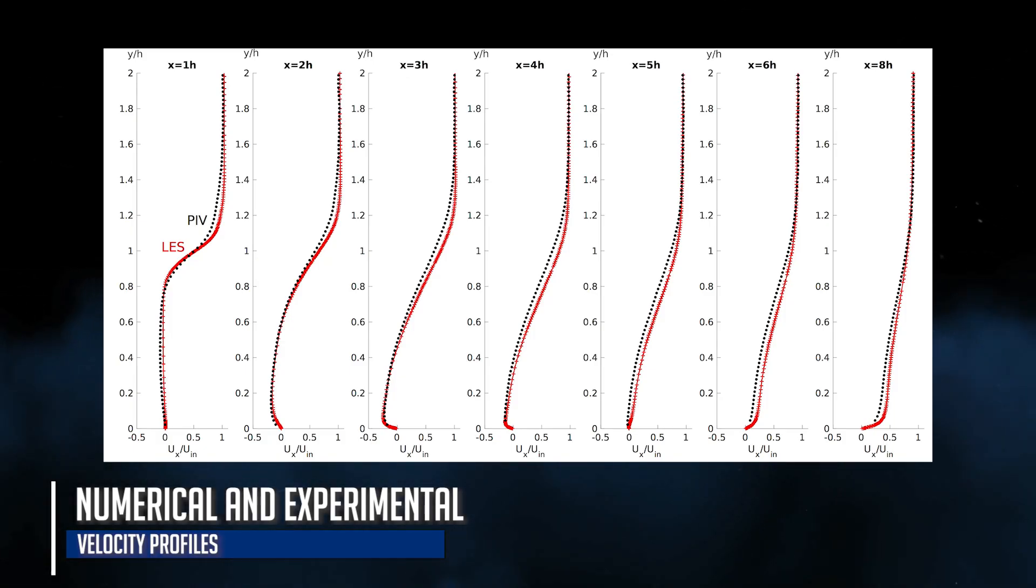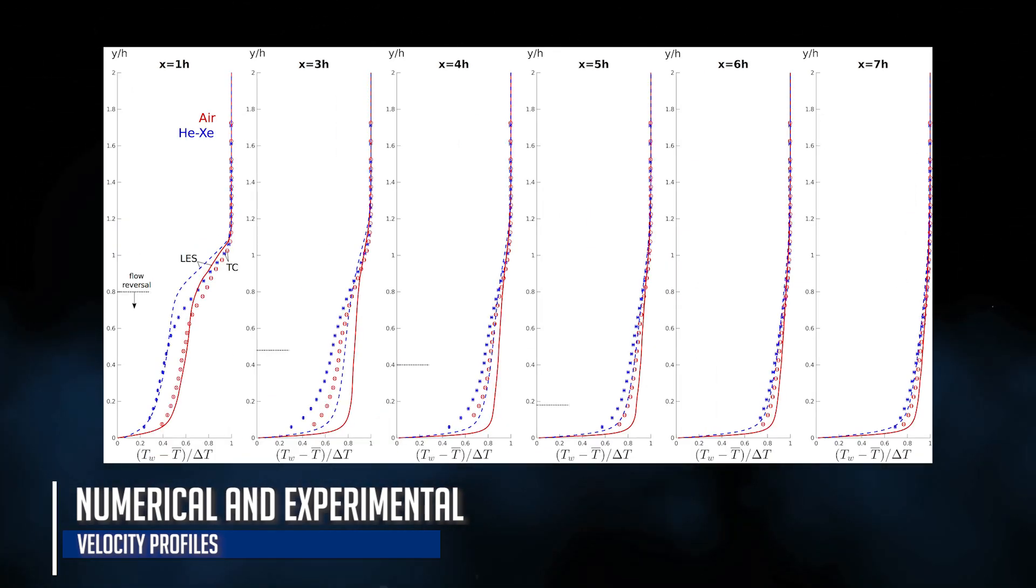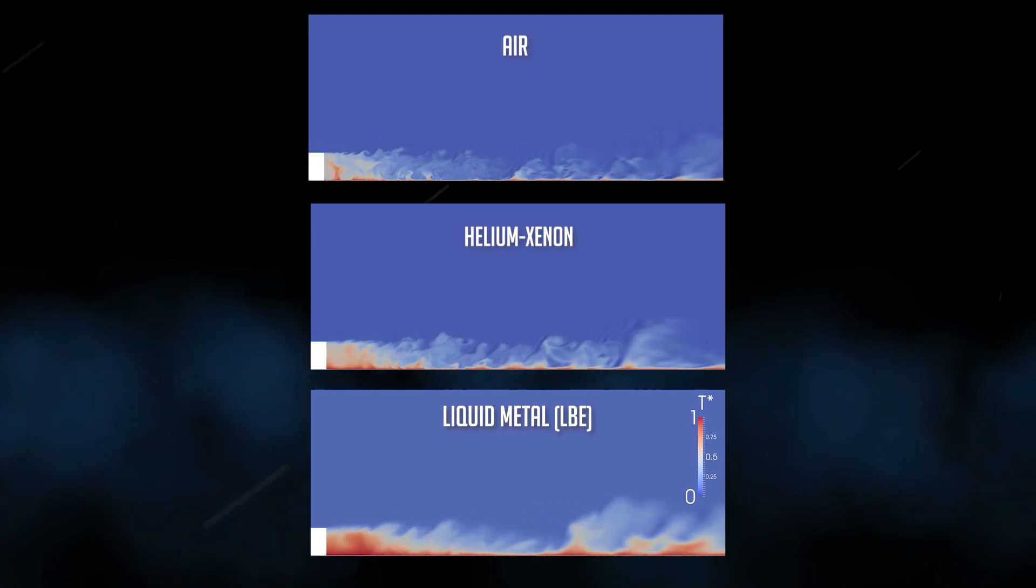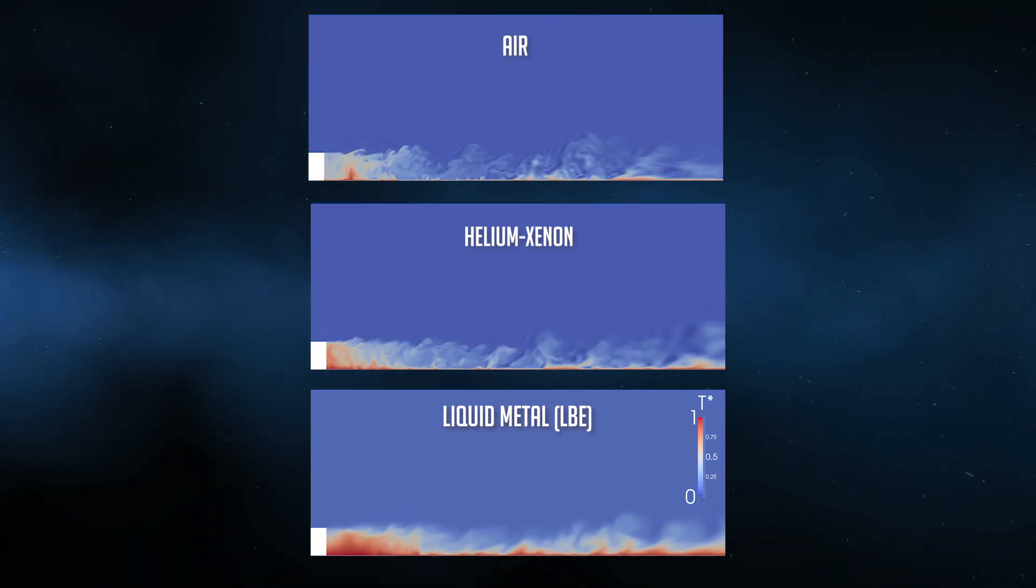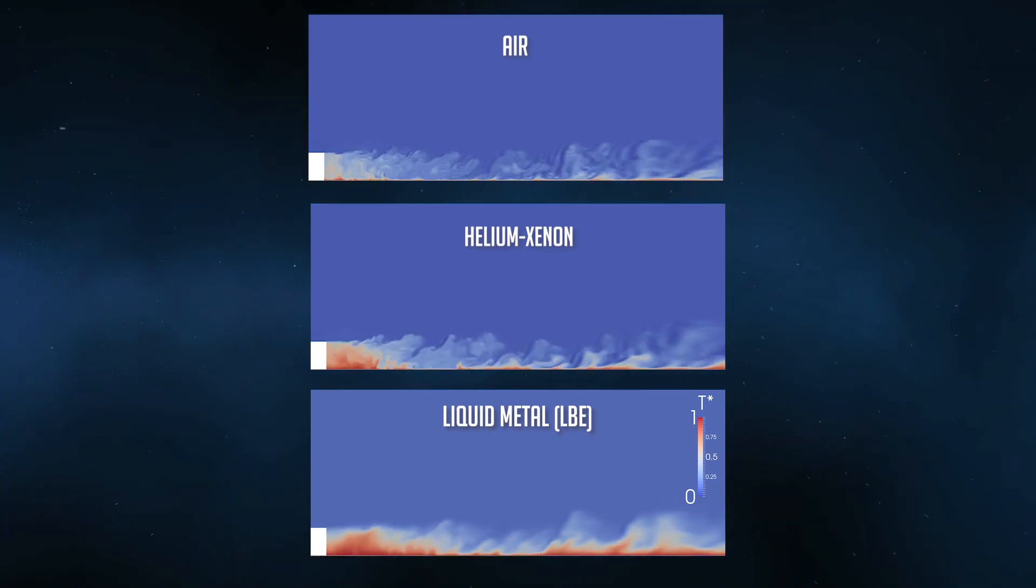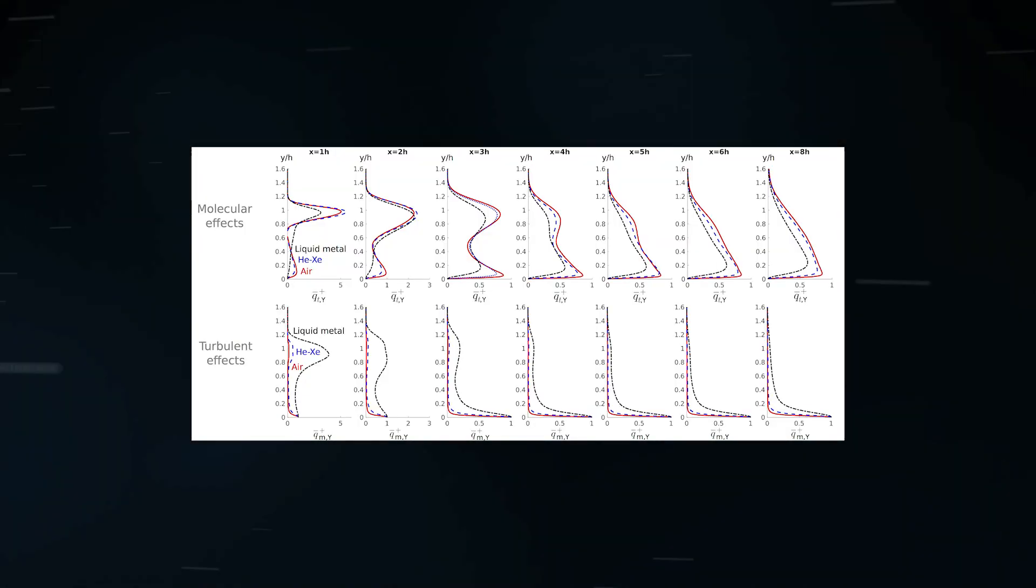Once validated in helium-xenon, the numerical simulations could be used to extend the database to liquid metals. Analyzing the differences between fluids enables us to improve our physical understanding of the heat transfer in liquid metals, in which larger thermal structures appear and heat is transported further away due to significant molecular effects known as thermal conduction.